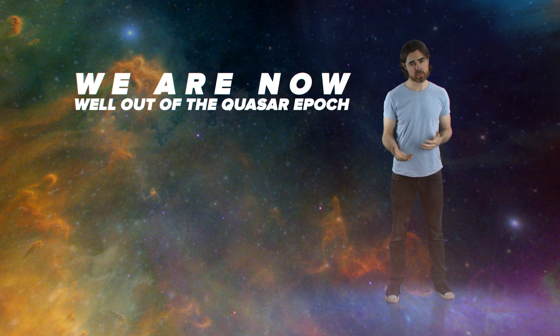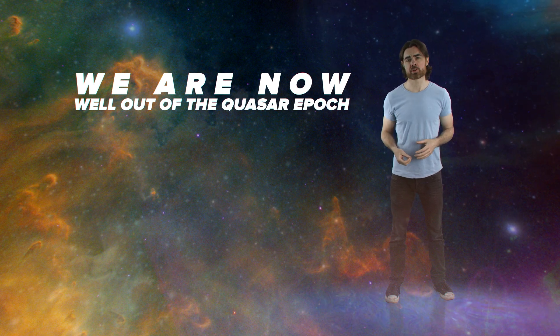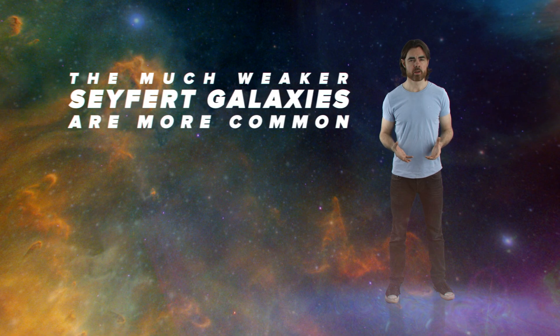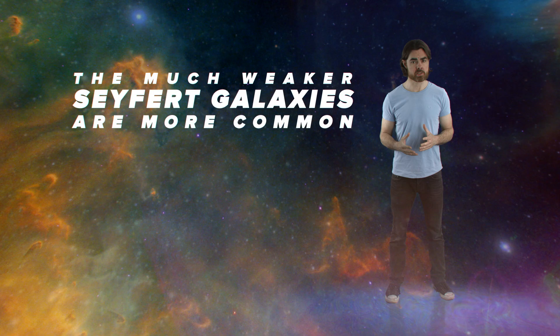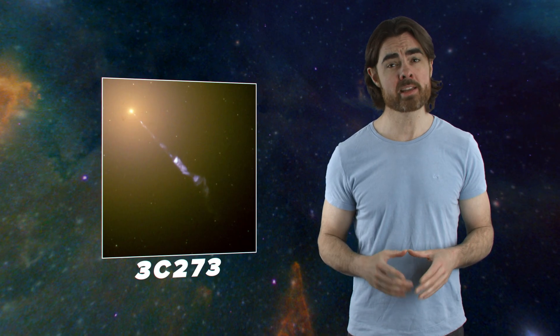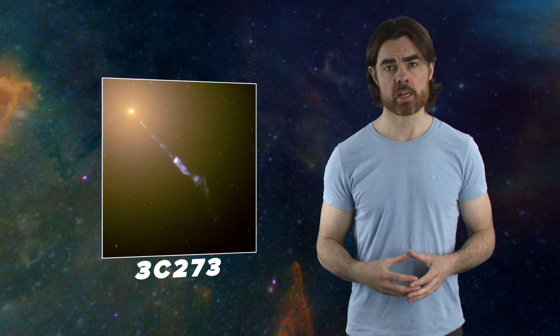We are now well out of the quasar epoch. Active galactic nuclei still do fire up in the modern universe, although usually they aren't at full quasar power. The much weaker Seyfert galaxies are more common. The good old 3C273 is a full-blown quasar. In fact, it's one of the most luminous known. Although it's far away, its light comes to us from a time long after the peak of the quasar epoch.